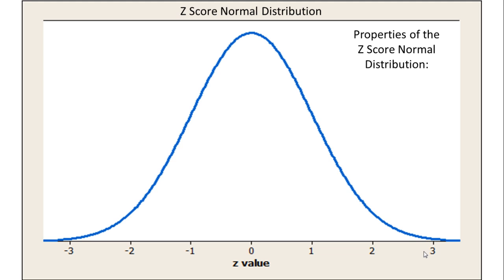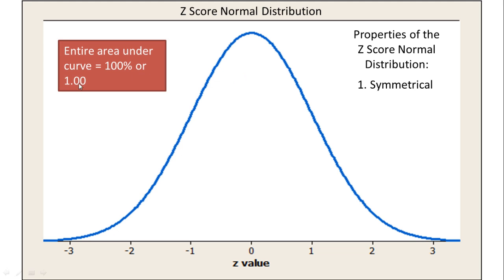First of all, the z-score distribution is symmetrical. What that means is if we define the area under this curve as 100%, or 1.00 if we're speaking in terms of proportions, that means that all of the values are underneath this curve or within this curve.